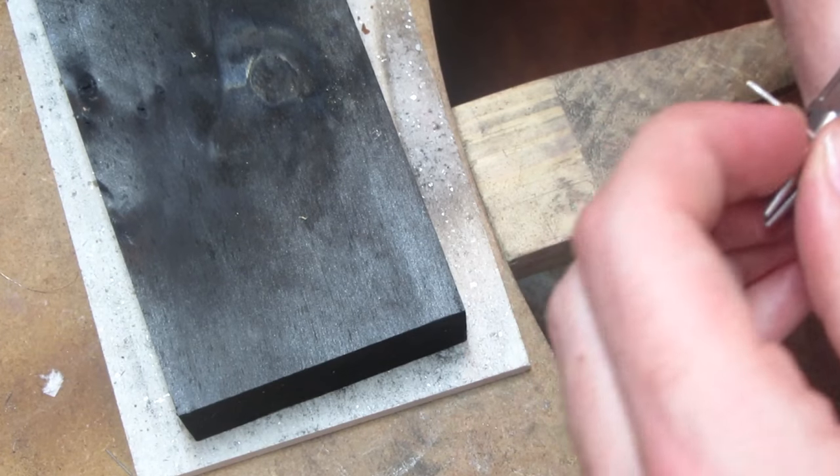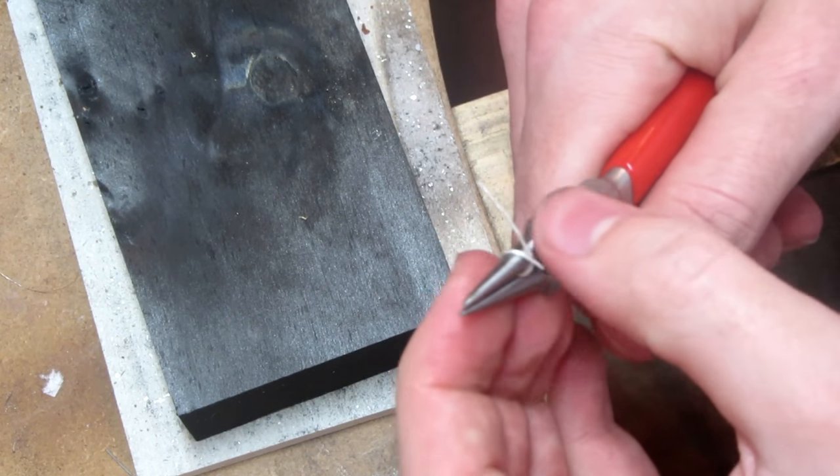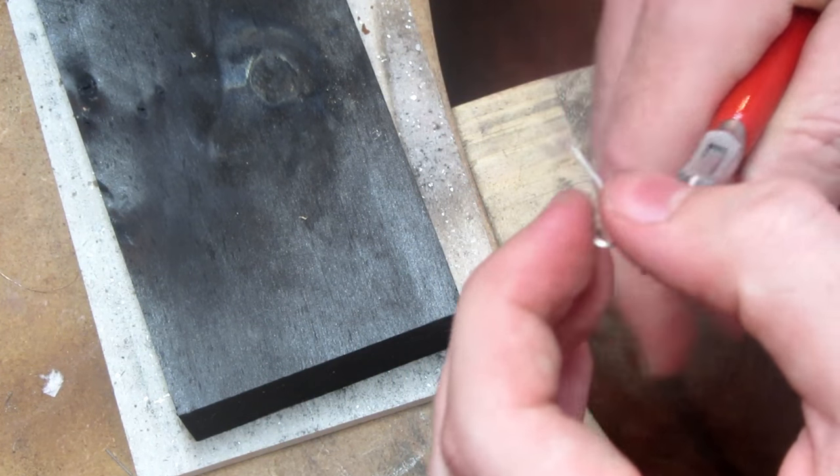I then made this loop created from 1mm ram wire. This would be where the necklace goes through at the end.